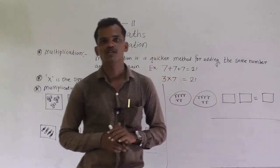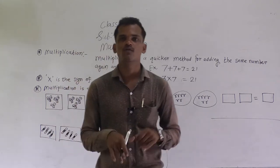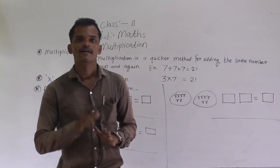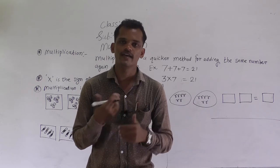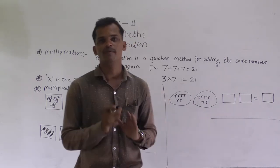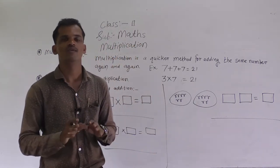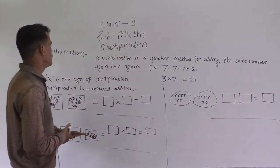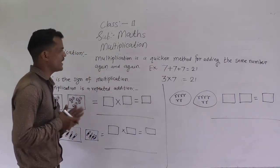Hey students, today we are going to start our new topic: multiplication. In our first standard, we have learned some basic terms of multiplication. Multiplication is the repeated addition — to add the same number again and again, we use multiplication. Multiplication is the fast method to add the same number more than one time. Today we will learn more about multiplication. Multiplication is the quicker method for adding the same number again and again.